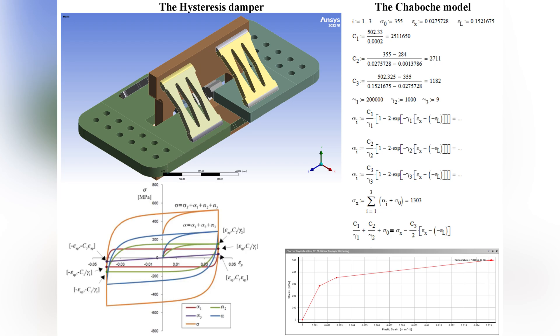Energy absorption is achieved by forced movement of the hysteresis elements in two different predetermined directions. Four hysteresis elements are activated in parallel, and the other four hysteresis elements are activated in series.